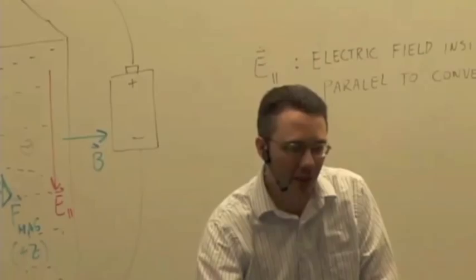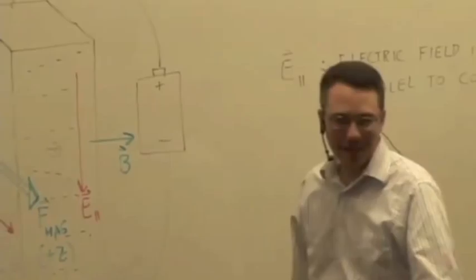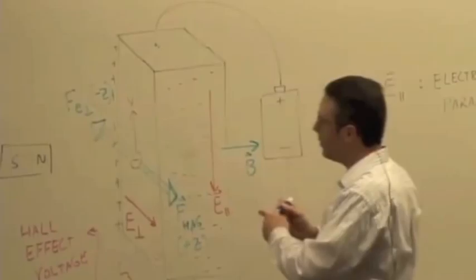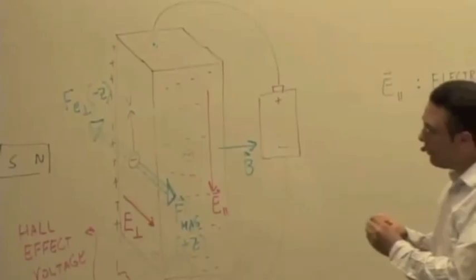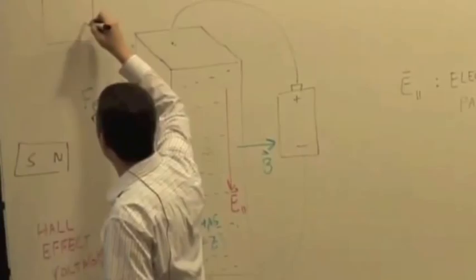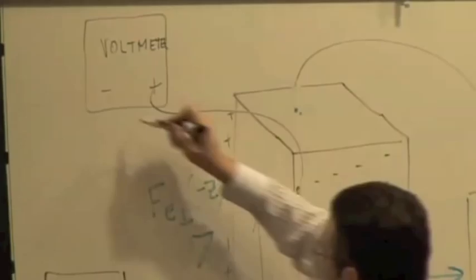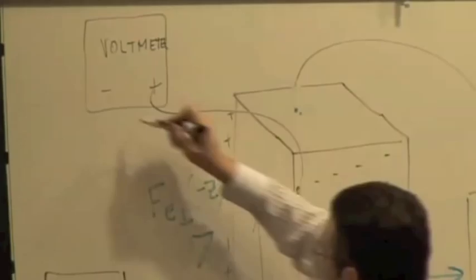Once we reach this steady state, the end result has to be this type of polarization to give us that electric force to balance the magnetic force, so charges travel through undeflected. Given this, let's say we connect a voltmeter across the bar — not across the ends, but transverse or perpendicular to the current in the bar. I'm hooking up the positive terminal to the front and the negative terminal to the back.